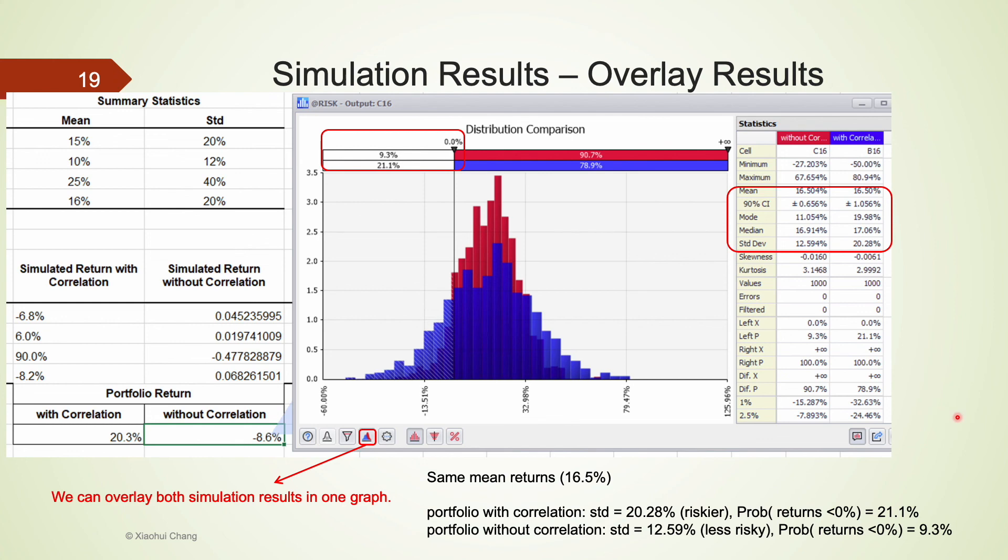It's worth mentioning that the portfolio with correlation is not a diversified portfolio. The four stocks tend to move in the same direction due to their higher positive correlation. To minimize risks while maintaining the average return of the portfolio, we should try to have a diversified portfolio. That would be the portfolio without correlation.